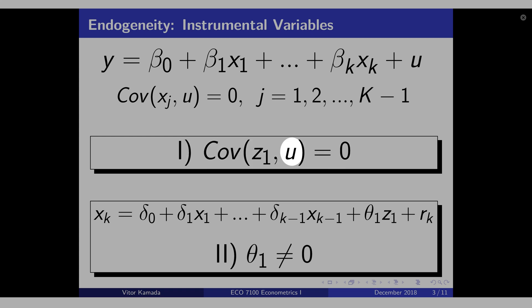This assumption here is a theoretical assumption. The error term is abstraction. It's not your data. You have to reason, you have to come up with theoretical arguments to justify this assumption here. You don't have the error term to calculate this covariance here.